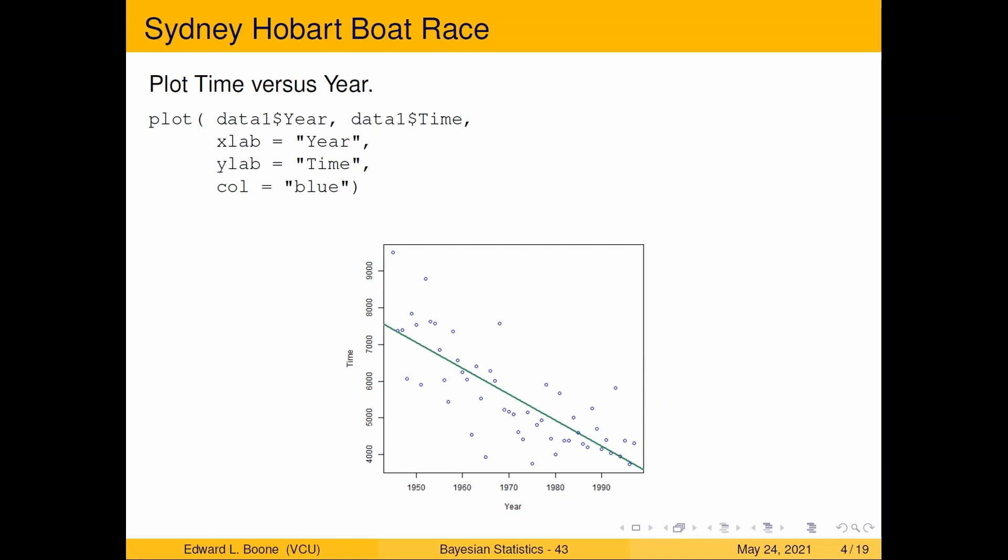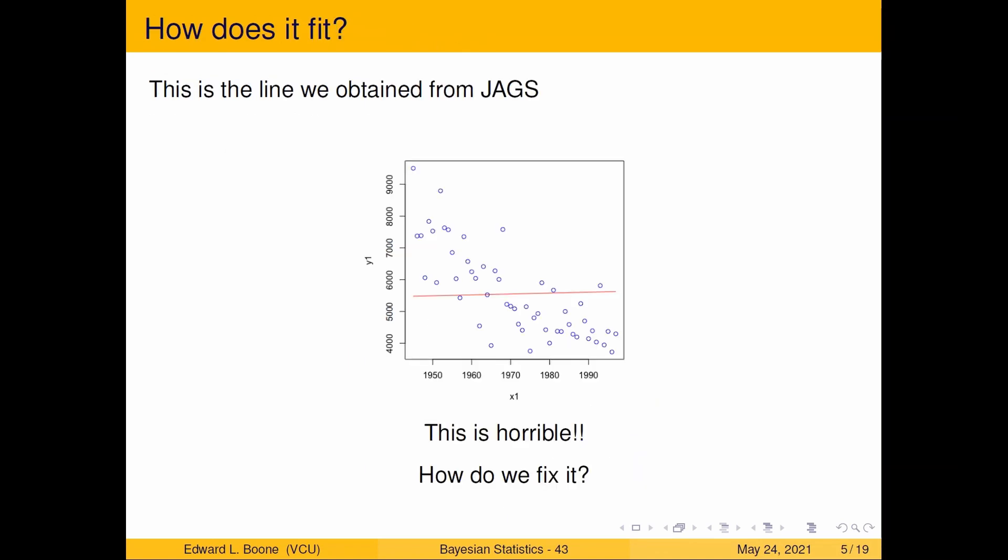From our last video, this is what we ended up with and what we need to do is figure out how to fix this. This is awful, right? The data is clearly going downhill but this line has a slight positive slope saying it's going to go uphill. That doesn't make sense. The big thing here is, if you're too naive and you think things are just going to fall right out of the sky for you, they often don't.